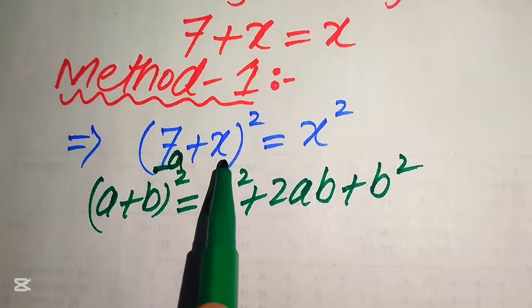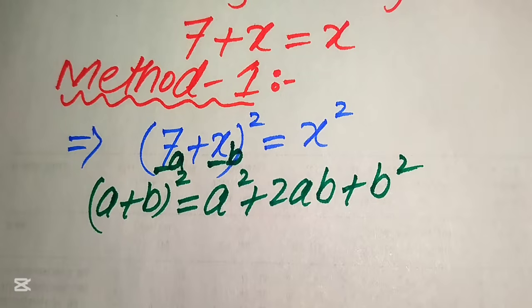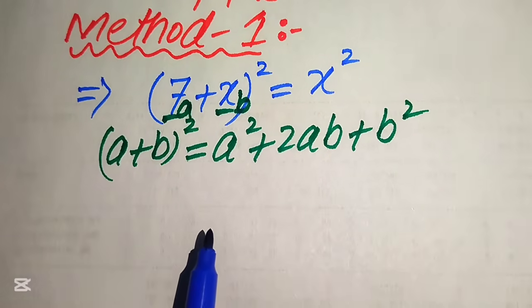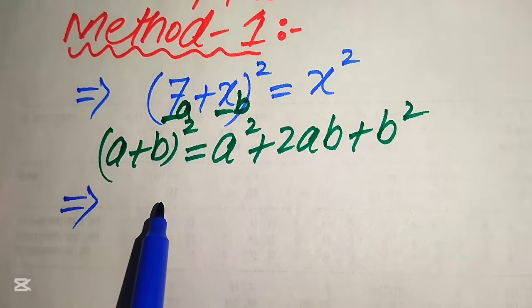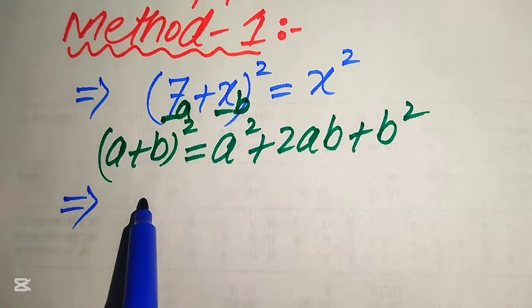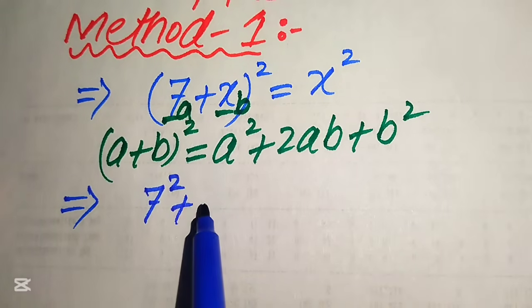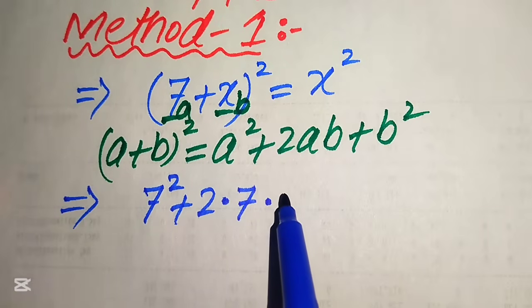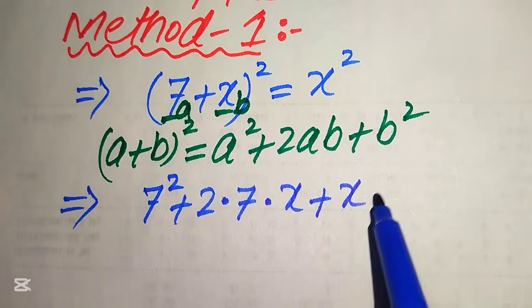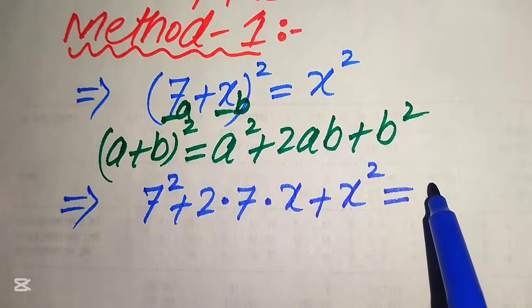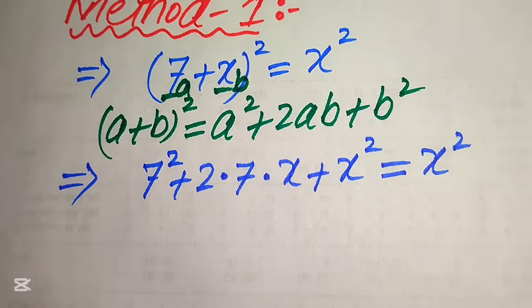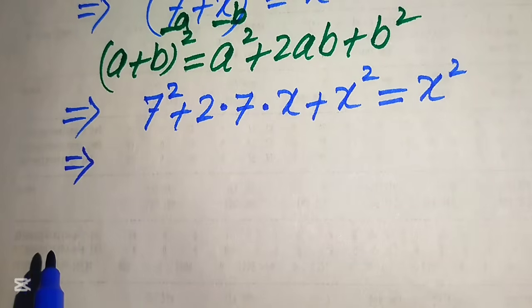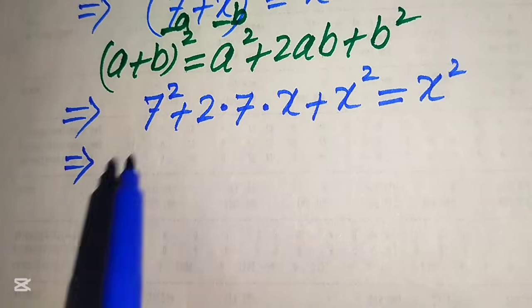Here, a = 7 and b = x. We put these two values of a and b into the formula. Expanding the left-hand side: 7² + 2·(7)·x + x² = x². In the next step we simplify the terms and add or subtract like terms.